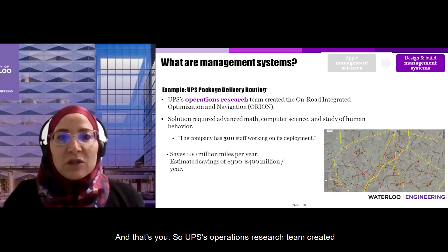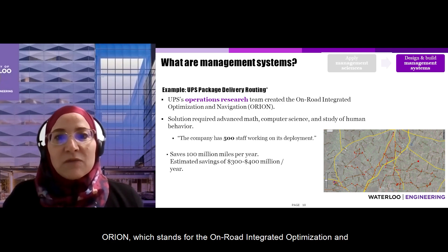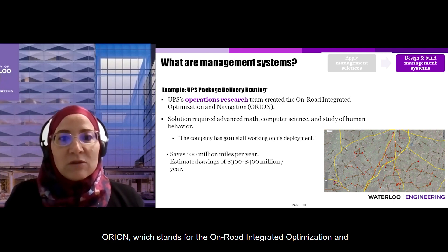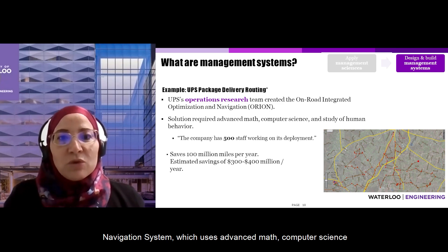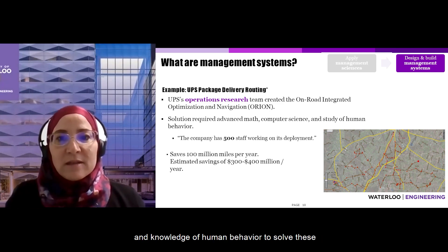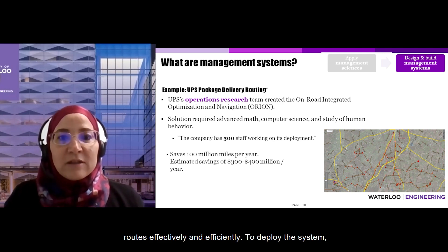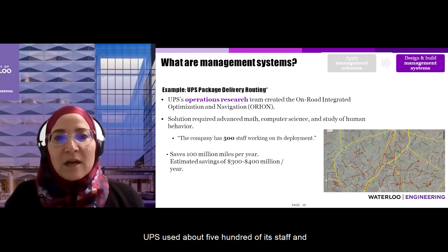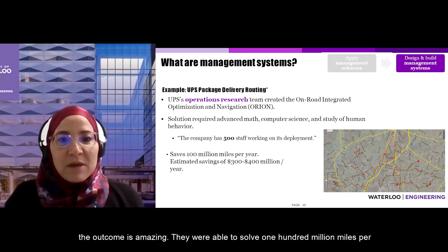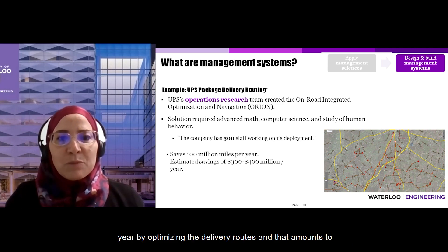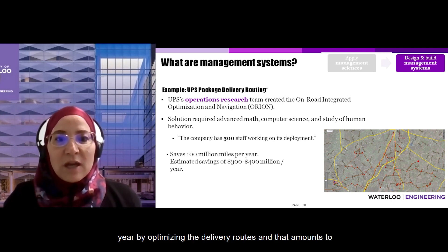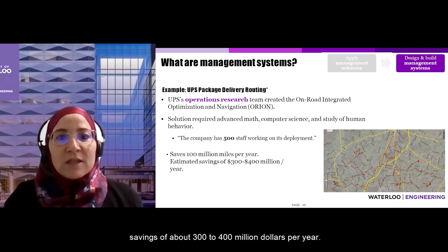UPS's operations research team created Orion — the On-Road Integrated Optimization and Navigation system — which uses advanced math, computer science, and knowledge of human behavior to solve delivery routes effectively and efficiently. To deploy the system, UPS used about 500 of its staff. The outcome is amazing: they were able to cut 100 million miles per year by optimizing their delivery routes, amounting to savings of about 300 to 400 million dollars per year.